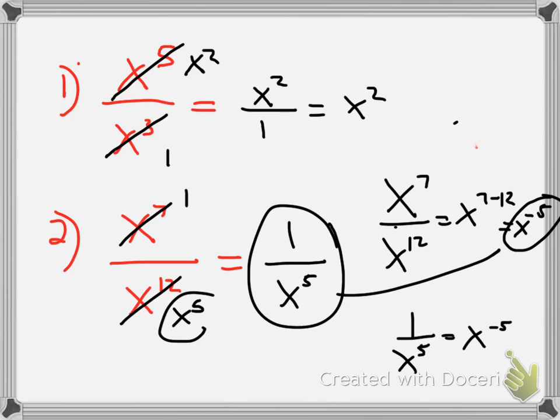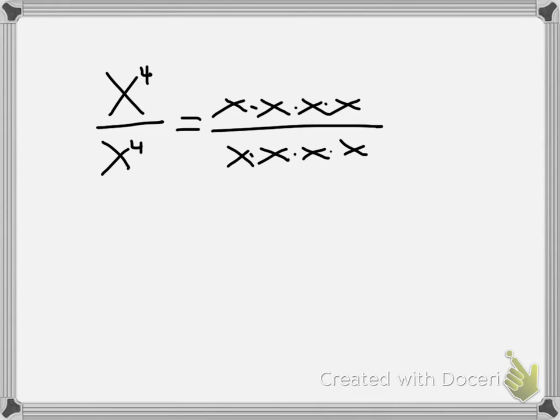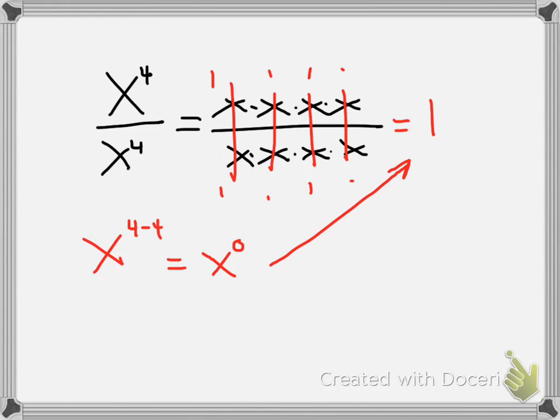Now, if I'm dividing x to the 4th power by x to the 4th power, I'm going to expand it out, and here's what I have. If I cross cancel, what am I left with? 1. What am I left with? 1. Now let's use the shortcut method. x to the 4th power, instead of dividing, what do I really do with my exponents? Subtract. And we are left with x to the 0 power. So what does x to the 0 power really equal? Not 0, it equals 1. So any time you get an x to the 0 power, it will equal 1.